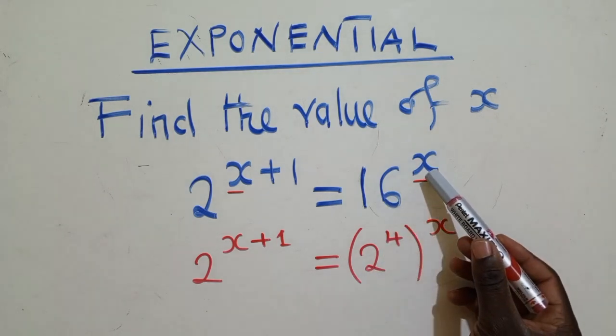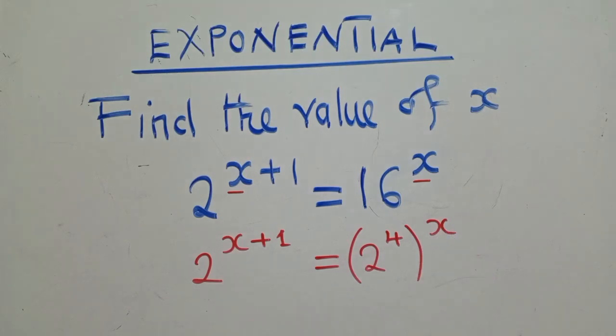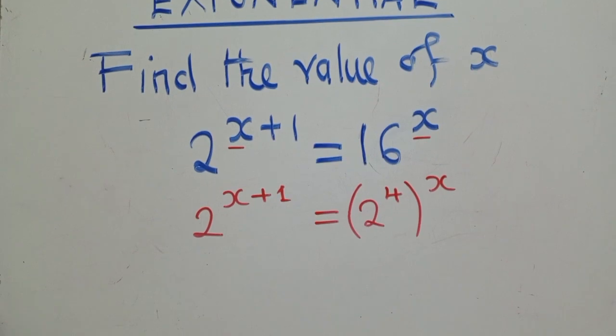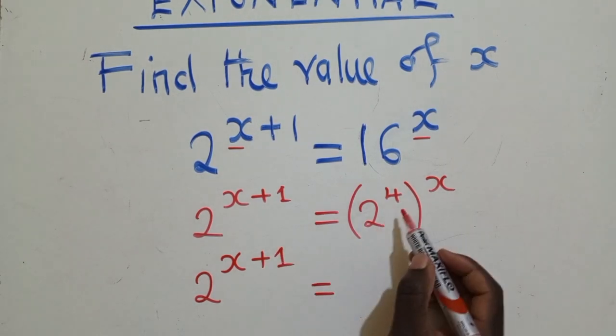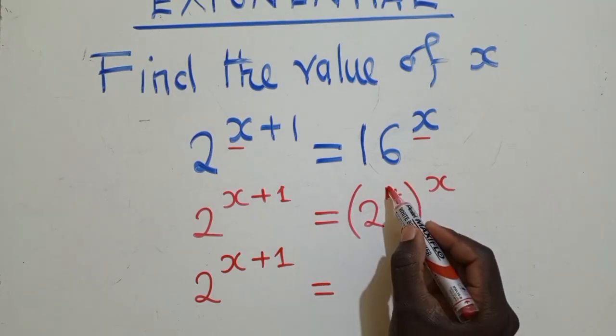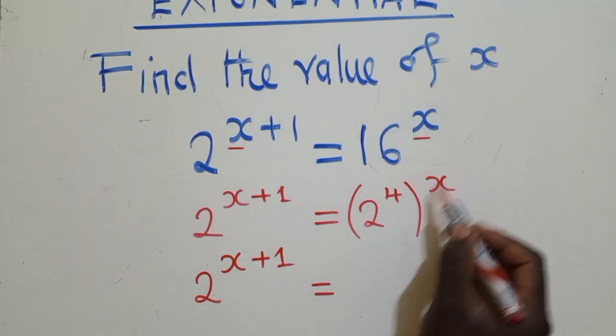There is a power here, which is the x and I've put it right here. Okay, so now from this stage, we can work out things. We say 2 power x plus 1, which is equal to, the laws of indices when you've got an exponent here and an exponent here, you multiply them.